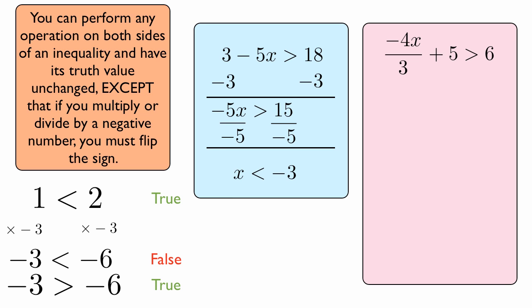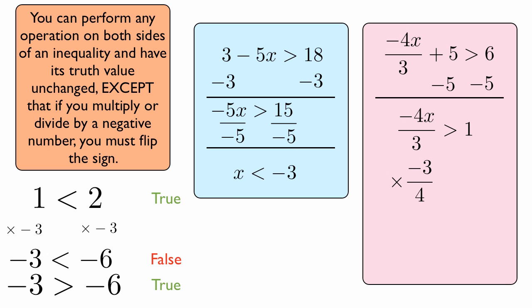Here's another example: negative four x over three plus five is greater than six. Just like an equation, we subtract five from both sides to get negative four x over three is greater than one. Then we multiply both sides by the reciprocal of this fraction — times negative three over four. And we get x is less than negative three over four, because we flipped the sign — because we multiplied both sides by a negative number. It's a more abstract case because they're fractions, but all the basic principles still apply.